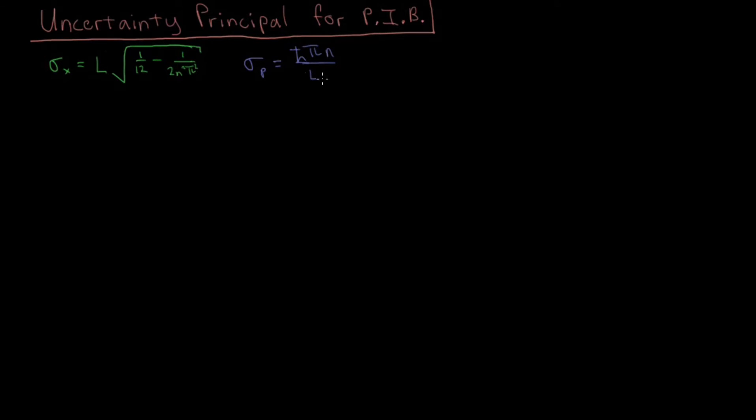So there's an inverse relationship between the two. As the box gets larger, the uncertainty in position gets higher and the uncertainty in momentum gets smaller. And as the box gets smaller, the reverse happens. So those two seem to relate for changing the value of L. That's good. But how does it work for changing the value of n? So let's combine these two and see how that works.